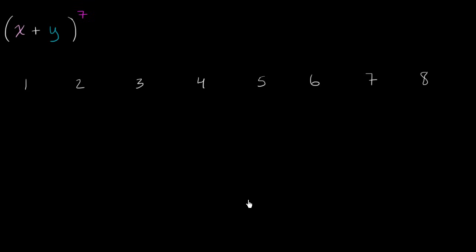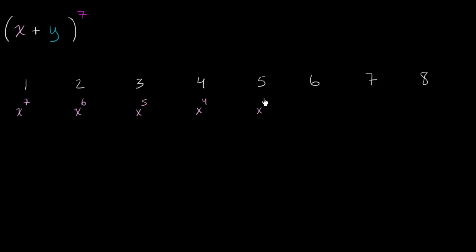Now let's write out the actual x's and y's. The first term starts with x to the seventh power. Then each term after that, the power on x goes down by one: x to the sixth, x to the fifth, x to the fourth, x to the third, x squared, x to the first. And this last one is x to the zero, which is just one.